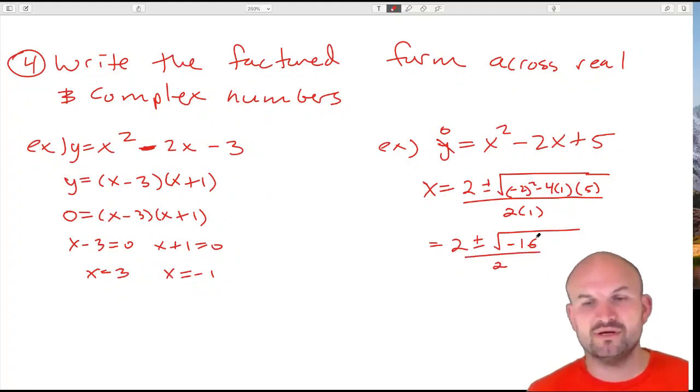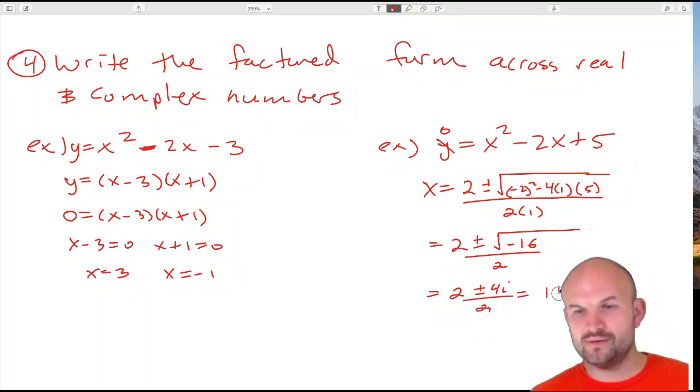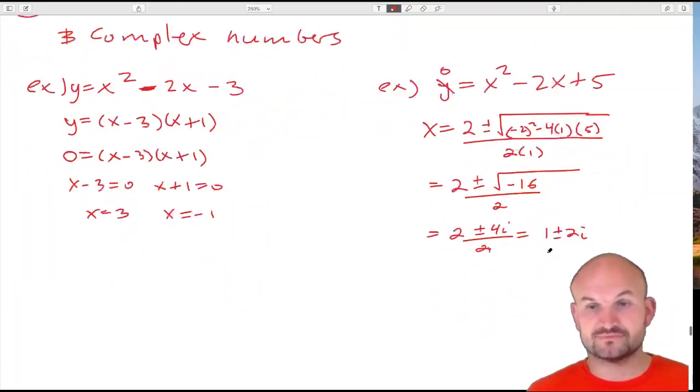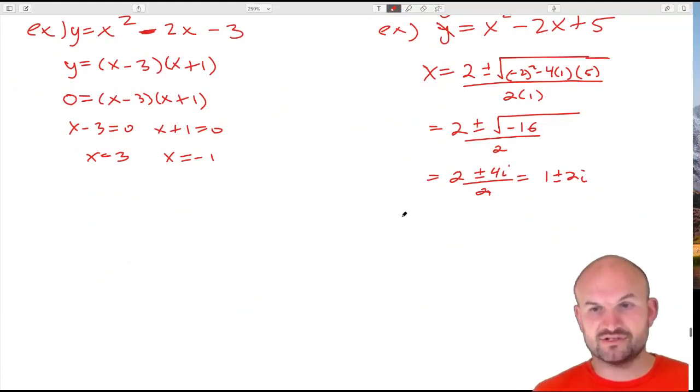Obviously you cannot take the square root of a negative number, but we can use our complex number system here and that's going to be 4i divided by 2. Divide that 2 into both terms and I get 1 plus or minus 2i. So my zeros are going to be x equals 1 plus 2i and x equals 1 minus 2i.